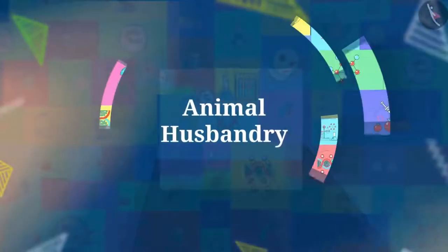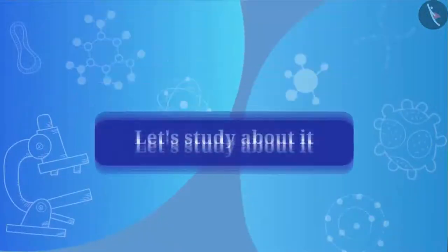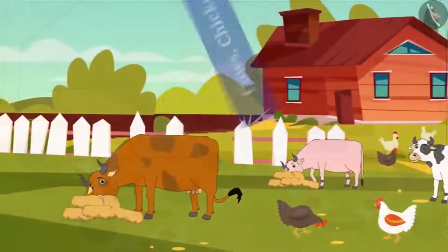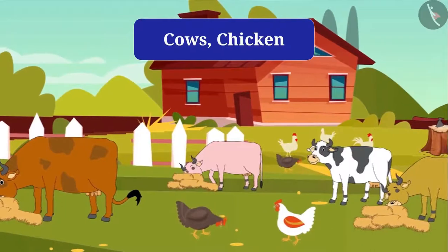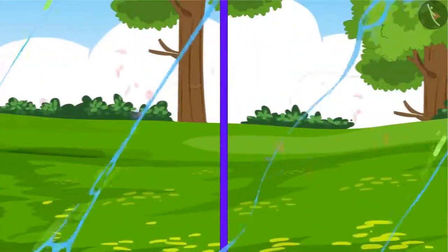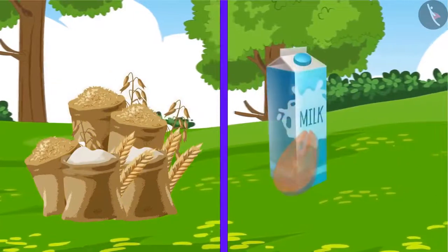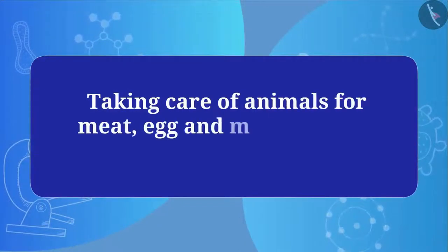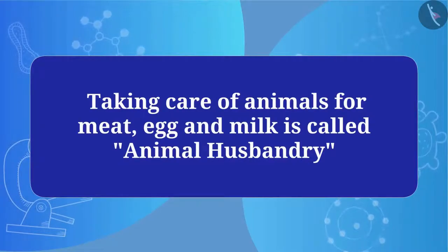Welcome to this video. We studied about how to improve crops. Now let's study about animal husbandry. Friends, you must have seen cattle farms and chicken farms at various places. All these animals like cows and chickens are kept at one place and taken care of. Apart from increasing crop production, we should also take care of animals so that we can get maximum food from them. Taking care of animals for meat, egg, and milk is called animal husbandry.